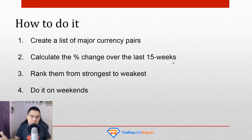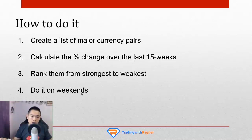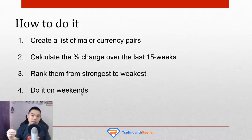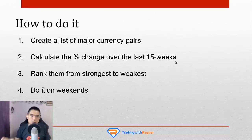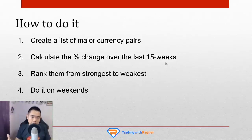Fifteen weeks is roughly 3 months, which is the lookback period — how much did price change over the last 3 months. Number three: rank them from the strongest currency to the weakest. Number four: ideally do it on the weekends when markets are closed, so the numbers are static and won't change. I usually trade off the 4-hour and daily time frame, so the 15-week rate of change suits me well. If you trade anywhere between the 4-hour and daily, the percentage change over the last 15 weeks is a nice sweet spot.